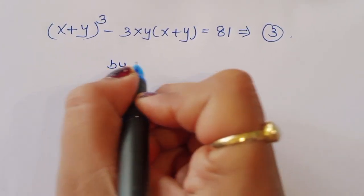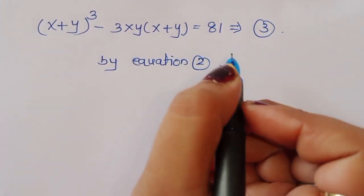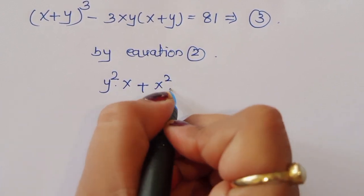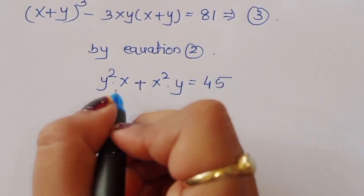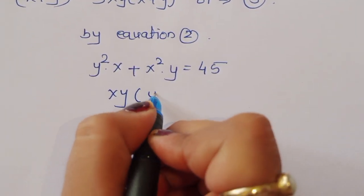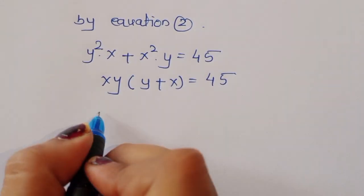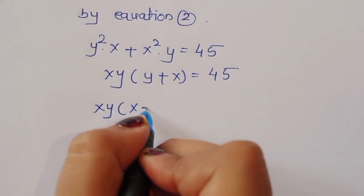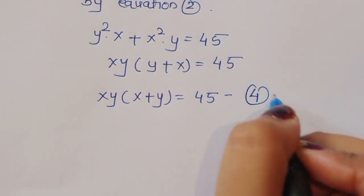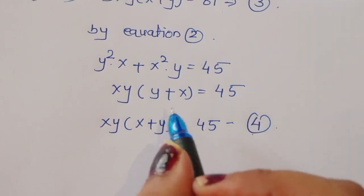Taking equation 2: y²x + x²y = 45. We can factor out xy, giving xy(y + x) = 45, so xy(x + y) = 45. This is equation 4.